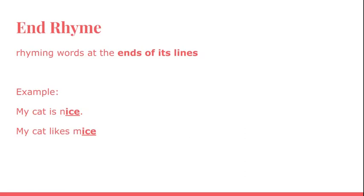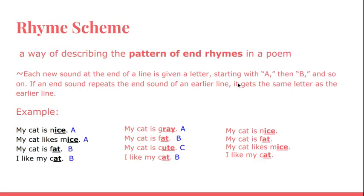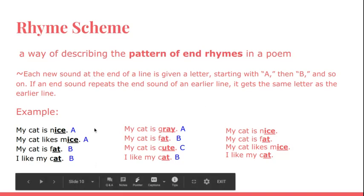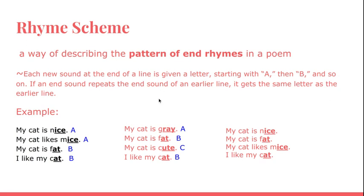End rhyme is rhyming words at the end of lines. Rhyme scheme is a way of describing the pattern of end rhymes in a poem. My cat is nice. My cat likes mice. Nice and mice rhyme, so you put an A there. My cat is fat. I like my cat. Fat and cat rhyme, so you designate that by putting a B. Rhyme schemes can have different patterns, as you can see in other examples.